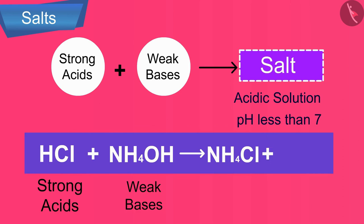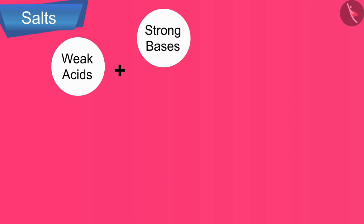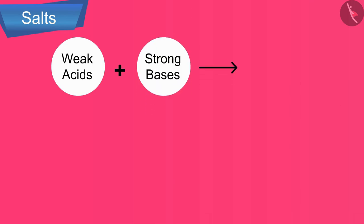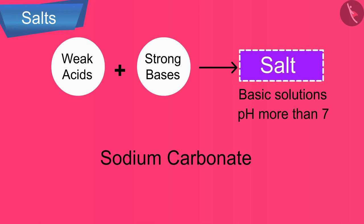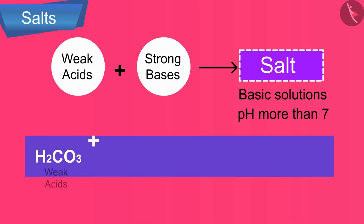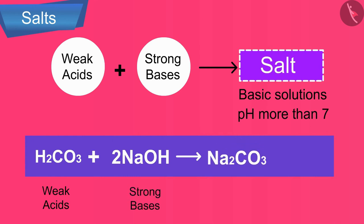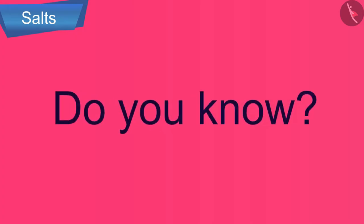And so the salt obtained is acidic in nature. Finally, the salts of weak acids and strong bases give basic solutions or alkaline solutions. For example, sodium carbonate salt is formed from a weak acid, carbonic acid, and a strong base, sodium hydroxide, and so the salt obtained is basic in nature.